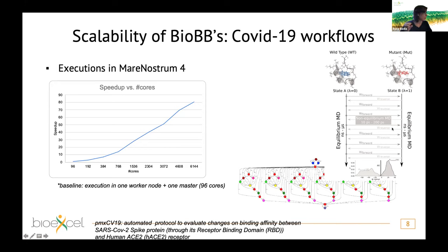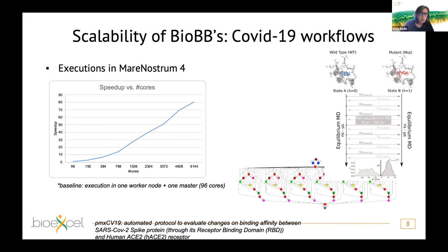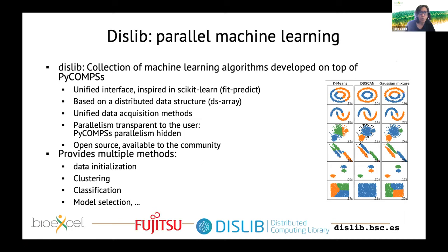Scalability studies were done for a smaller use case with 250 simulations that have dependencies between them — not embarrassingly parallel. The baseline is execution on two nodes of MareNostrum (one master, one worker), scaling up to 128 nodes. Results show quite good scalability, even accounting for some load balancing issues due to the problem not being perfectly balanced.